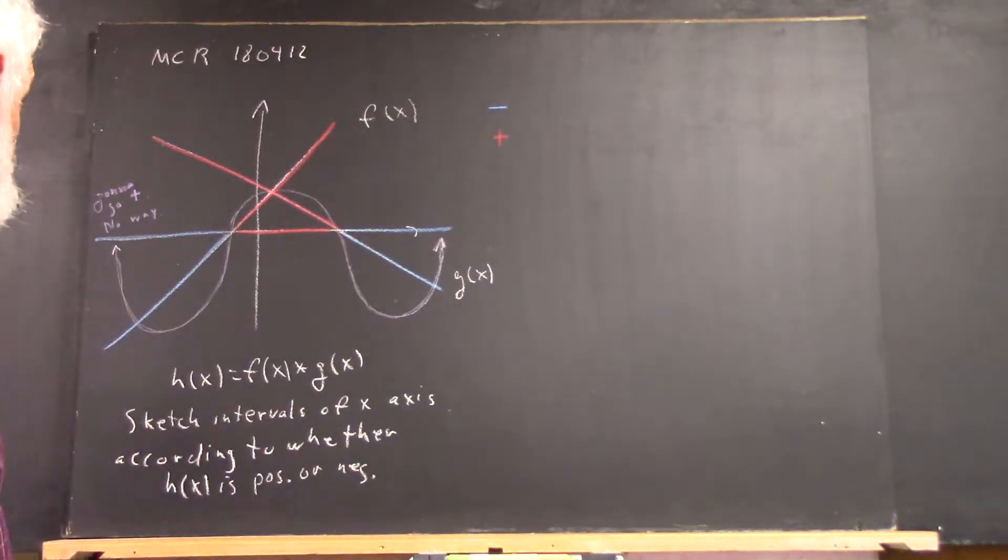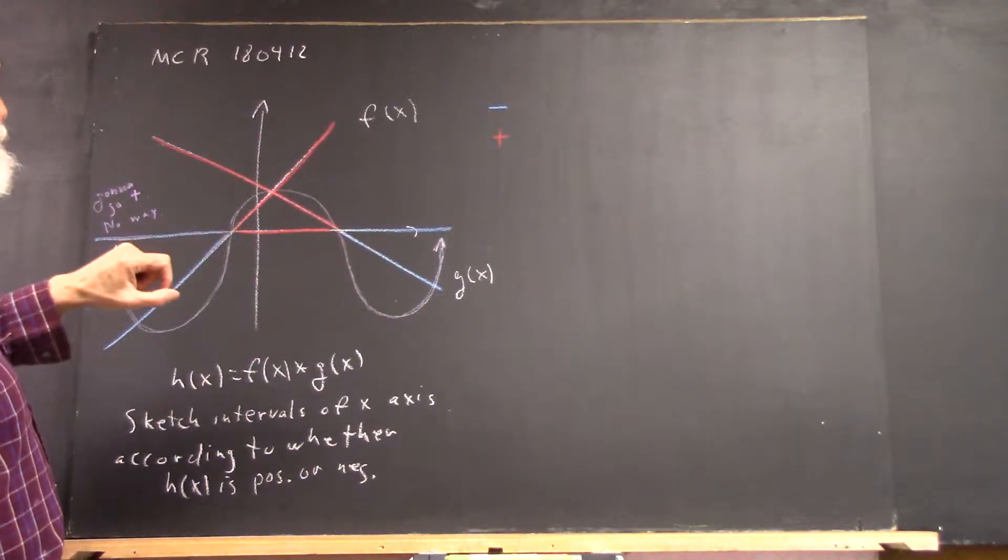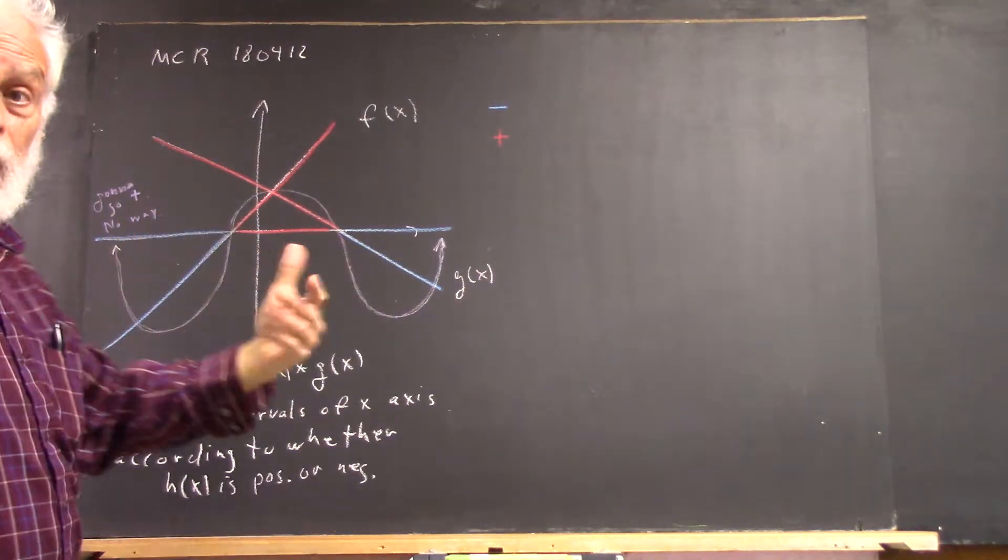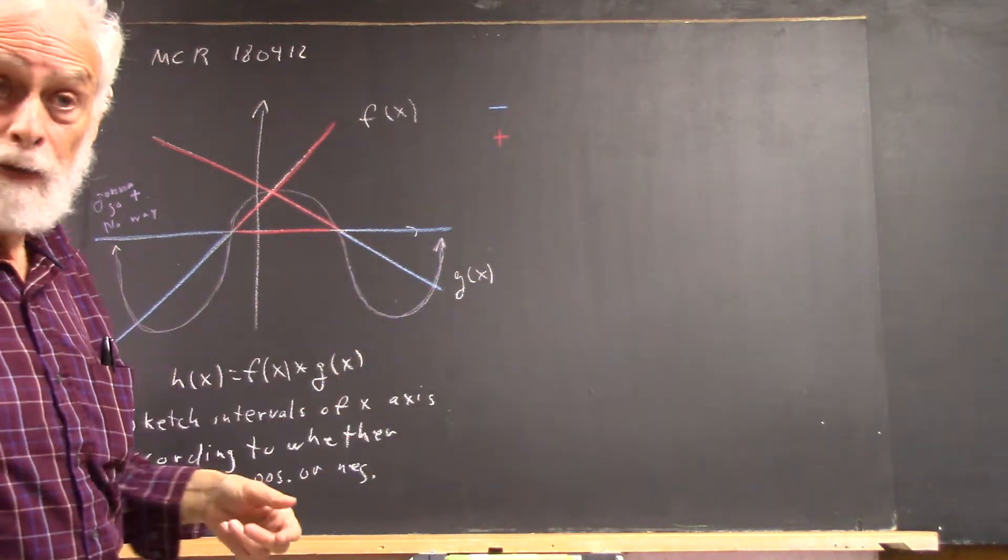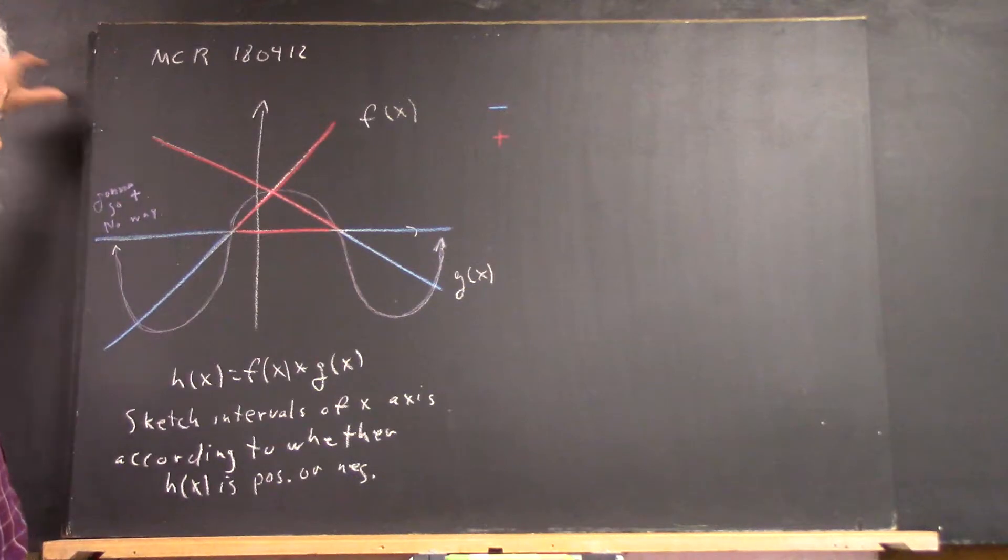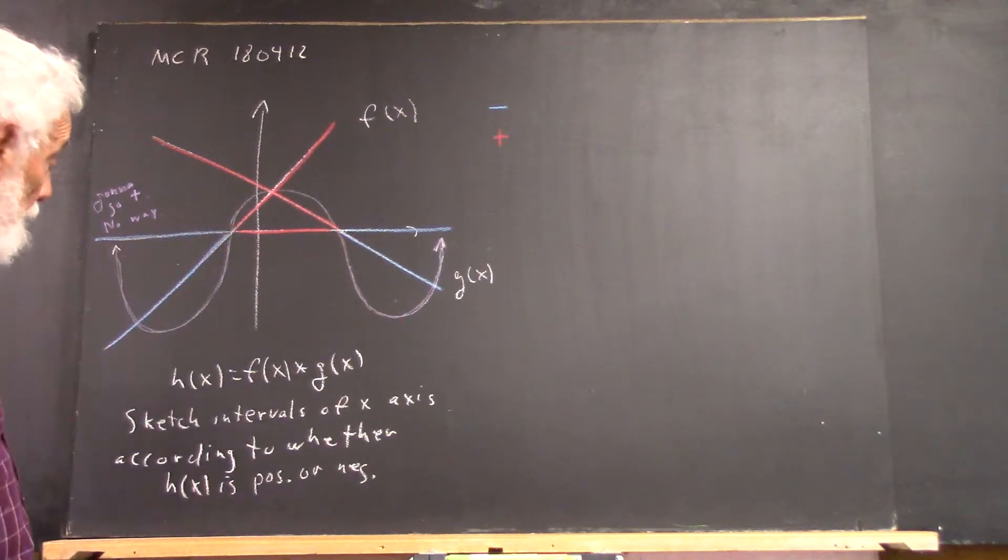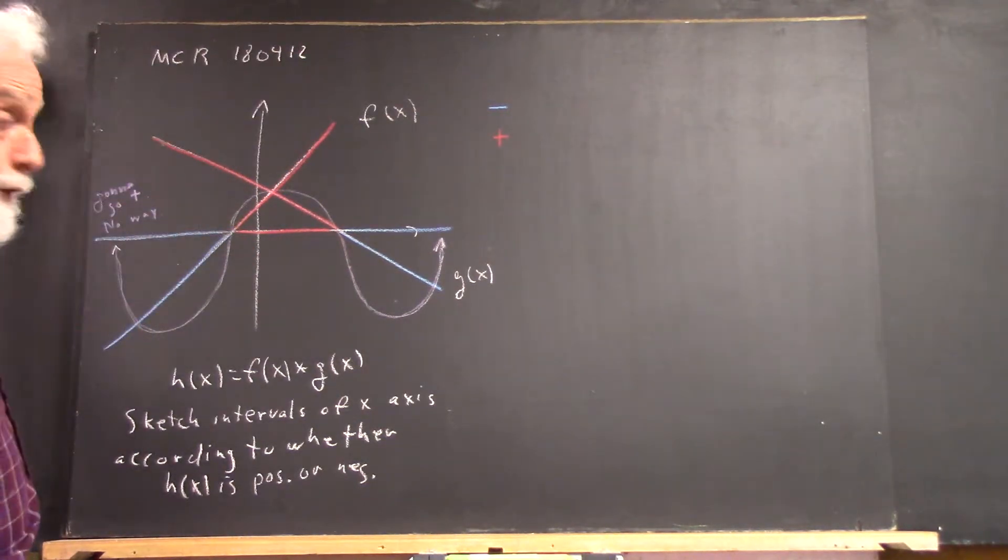Now, the other thing is, what's happening to the magnitude, meaning the absolute value, how big the numbers are, whether positive or negative, what's happening to how big the numbers are as you go to the left? Once you get past this zero, this number's getting bigger, negative, but it's getting bigger, and so is this one, right?